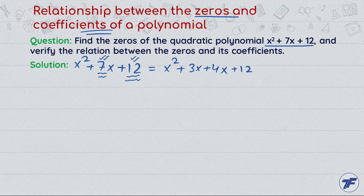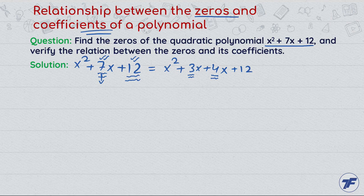I am sure that you will get this factorization. This 7 is broken into two numbers, 3 and 4, such that their addition is 7 and their product is the constant 12.